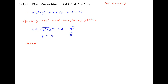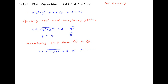Substituting the value of y obtained in equation 2 into equation 1, we get x plus square root of x squared plus 16 is equal to 3, which can be rearranged as square root of x squared plus 16 is equal to 3 minus x.